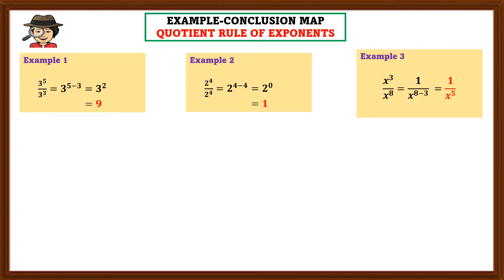Let's have number 3 example. x raised to 3 over x raised to 8 is equal to 1 over x raised to 8 minus 3. Take note: if the exponent of the numerator is less than the exponent of the denominator, you are going to reciprocal — just simply interchange the exponent. That's why 8 minus 3 gives us 1 over x raised to 5.